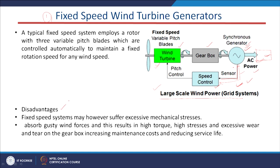What are the disadvantages of this type of wind generating system? The first one is the fixed speed systems may suffer excessive mechanical stresses. The second one is it absorbs the gusty wind forces, and this results in high torque, high stresses, and excessive wear and tear. The maintenance cost increases and the wear and tear mechanism is basically on the gear box.